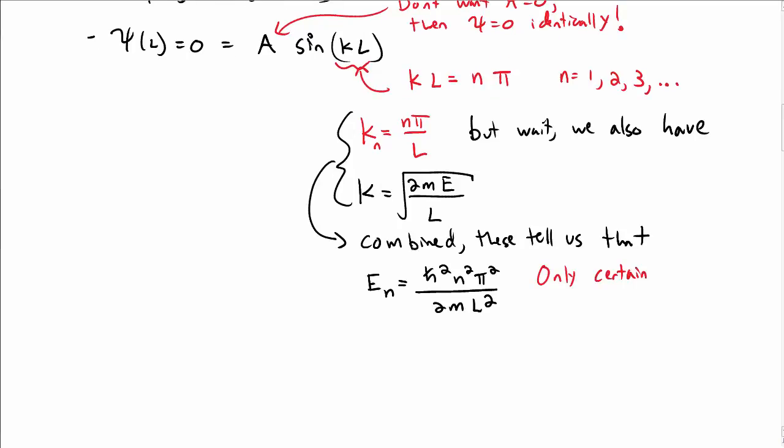So what this means is that only certain energies E_n are allowed for the particle inside a box. This is the main idea behind quantized energy levels in quantum mechanics.